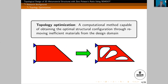Topology optimization is quite popular, and I think most researchers know what topology is. It's just a lightweight design tool. You can remove inefficient materials to achieve your lightweight goal, and then you can get a high-performance structure. It is a very popular technique nowadays for lightweight design.